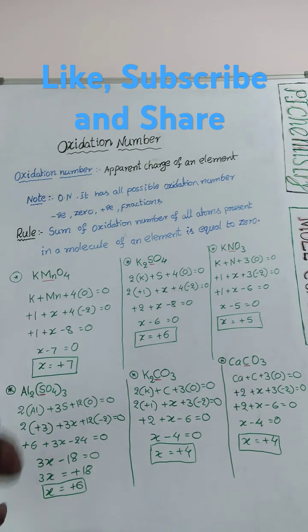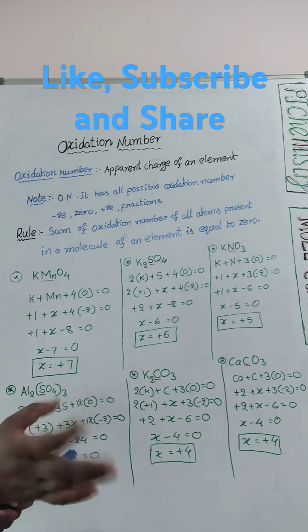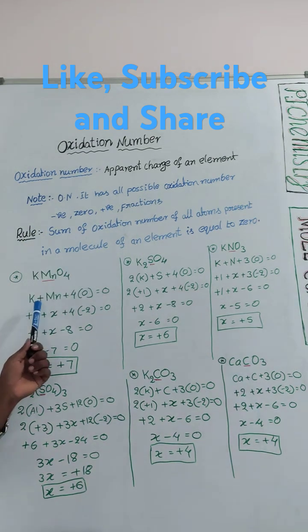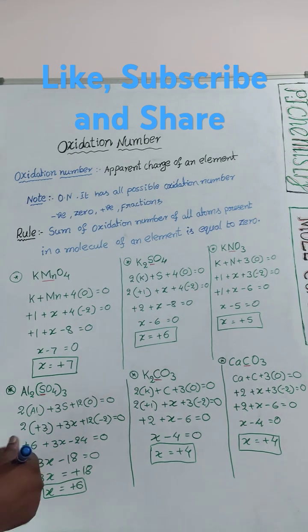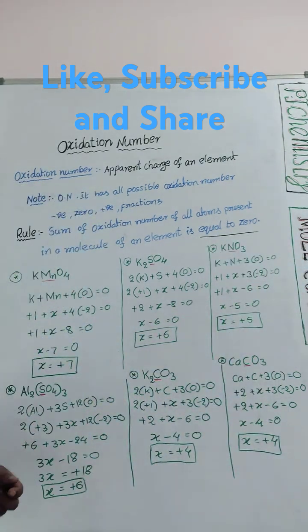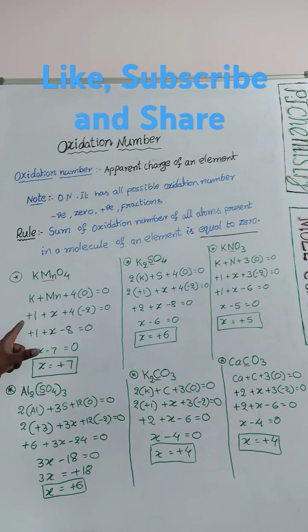For example, KMnO4, potassium permanganate. I need the oxidation number of manganese. As per the rule, sum means potassium plus manganese plus 4 oxygens equals zero. Potassium loses 1 electron to get stability, so charge is +1. Potassium oxidation number is +1.